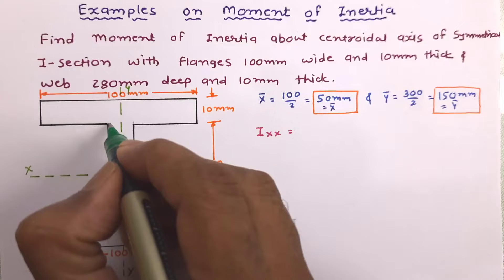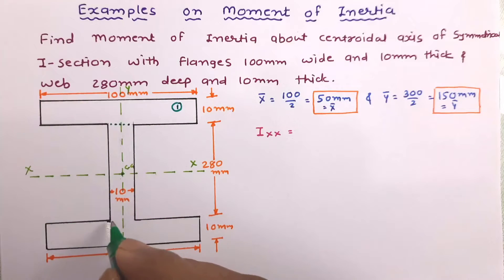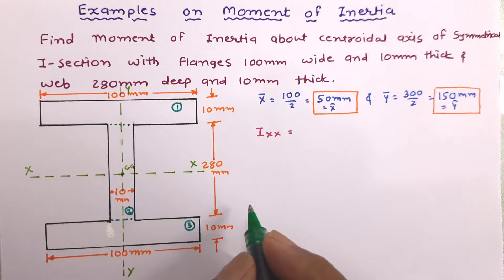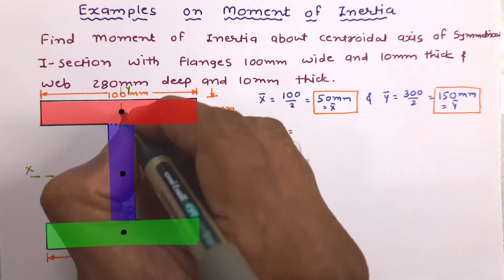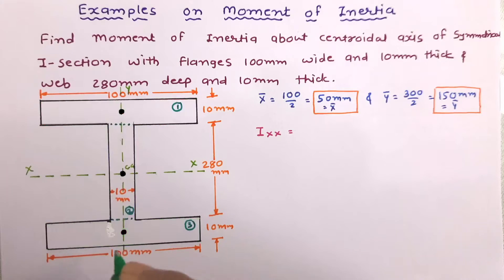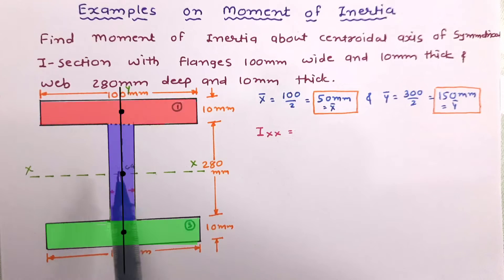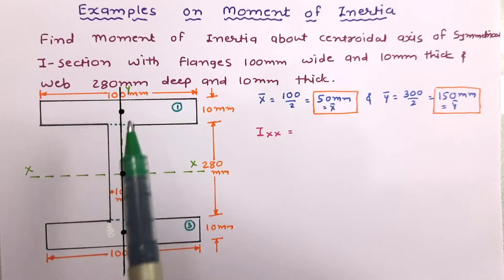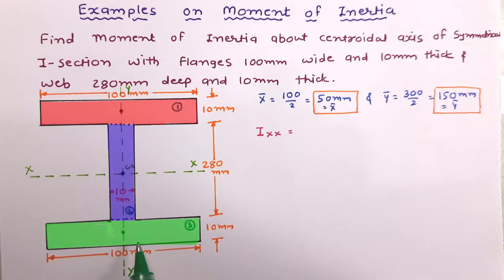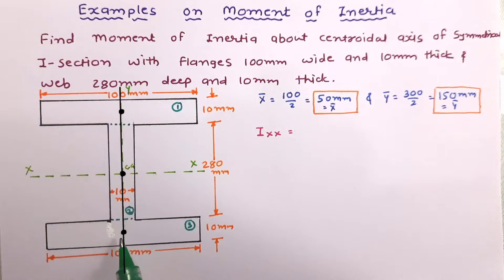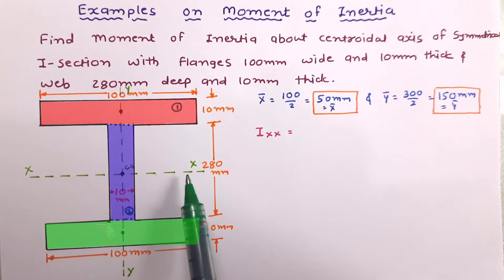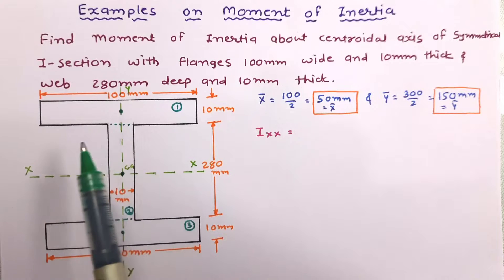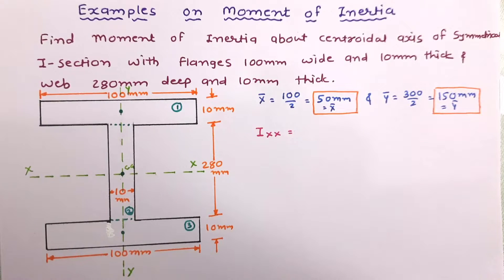Now, if we divide the figure into three rectangles in the conventional way, the centroids of the three parts do not all lie along the centroidal X-axis of the complete figure. In that case, we would need to use the parallel axis theorem. A simpler method is to divide the figure such that the centroids of all component parts lie along the centroidal axis of the complete figure.